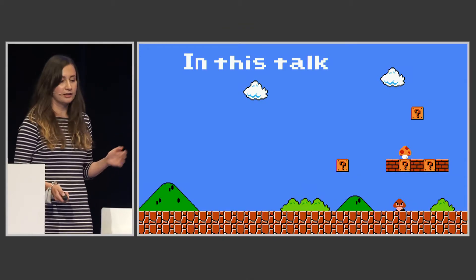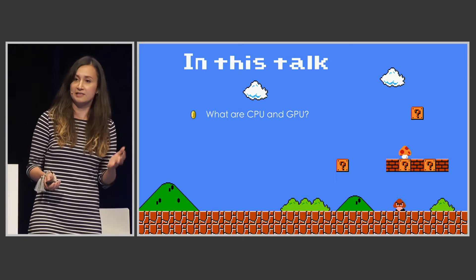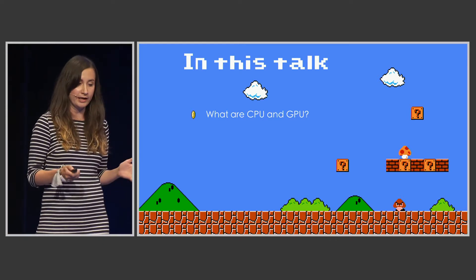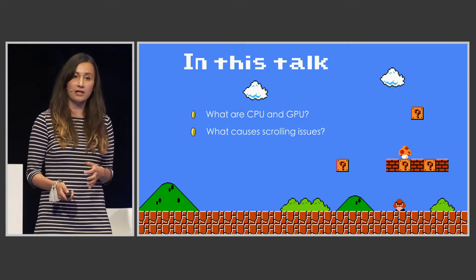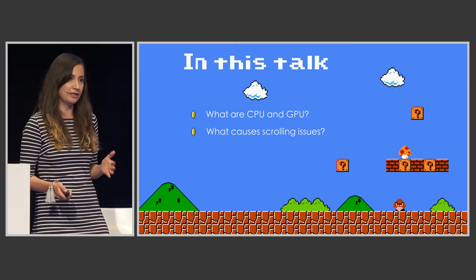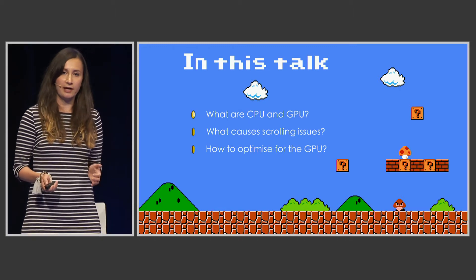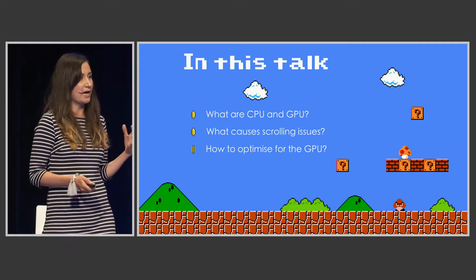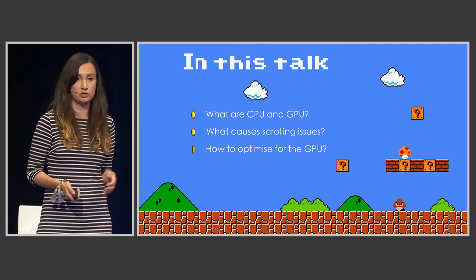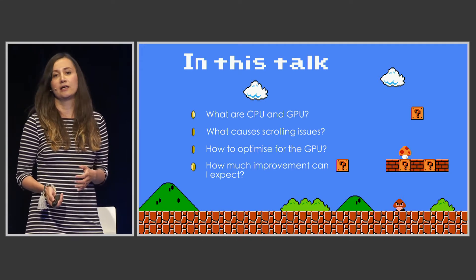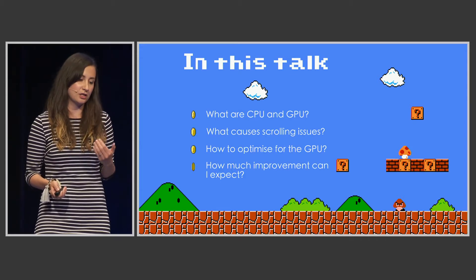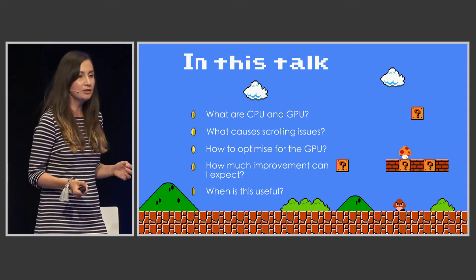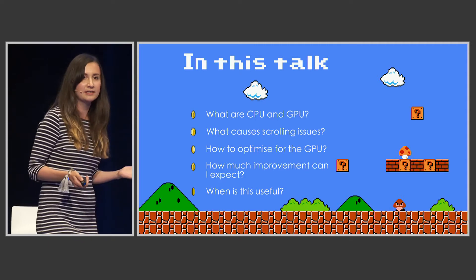In this talk, we will first talk about what the CPU and the GPU are and what their roles are in UI. We will talk about what causes scrolling issues. We will then talk about how to actually optimize for the GPU, and I will show you some actual code. We will discuss exactly how much improvement you can expect, and lastly when this is actually useful.